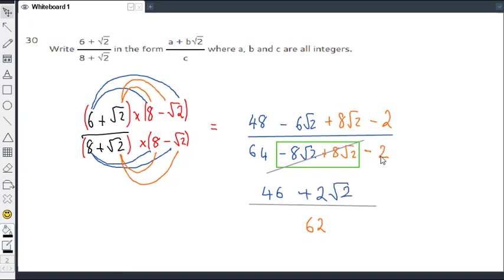Now the question asks us to write it in this form, a plus b root 2 over c. We could leave it like that. That would be your a, that would be your b, that would be your c. But all these numbers, 46, 2 and 62, are all even numbers. So we should really be able to divide everything by 2.